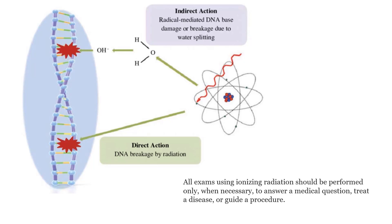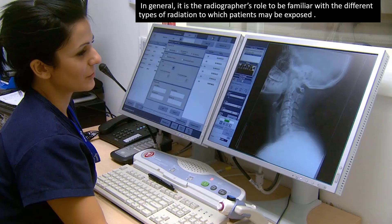There are two methods for the energy from ionizing radiation to damage the DNA in the nucleus of the cell. The first is an indirect action, wherein the energy causes a chemical reaction damaging the nucleus. The second is when the photon has a direct hit on the DNA strands, either breaking one or two strands of DNA. In general, it is the radiographer's role to be familiar with the different types of radiation to which patients may be exposed and the effects of exposure.